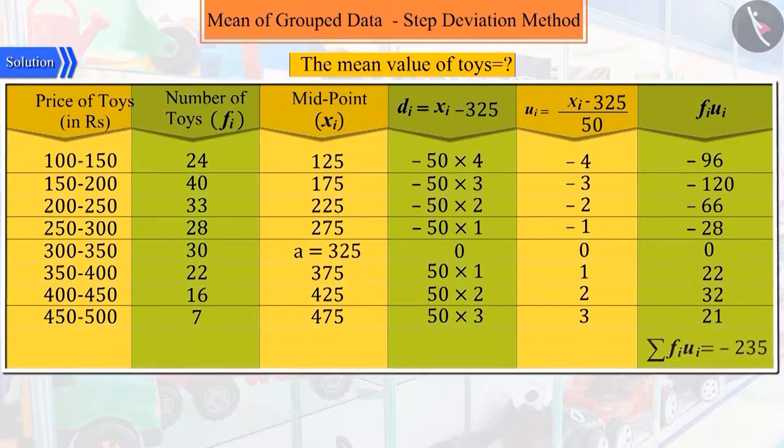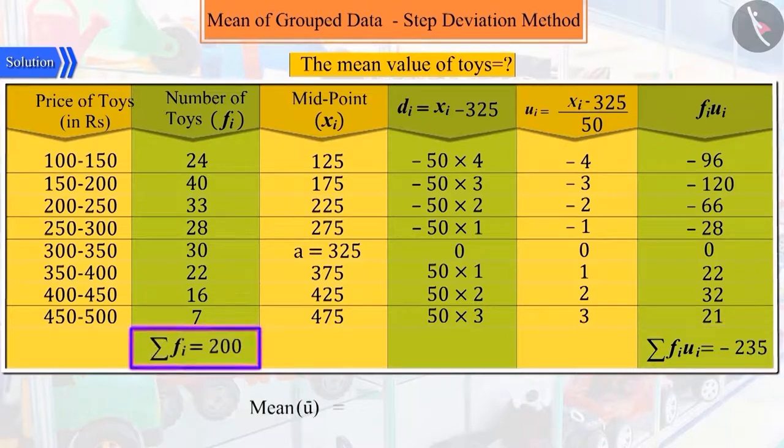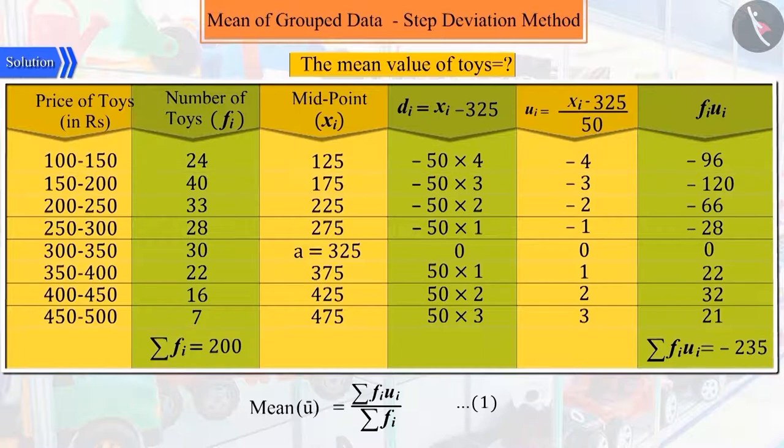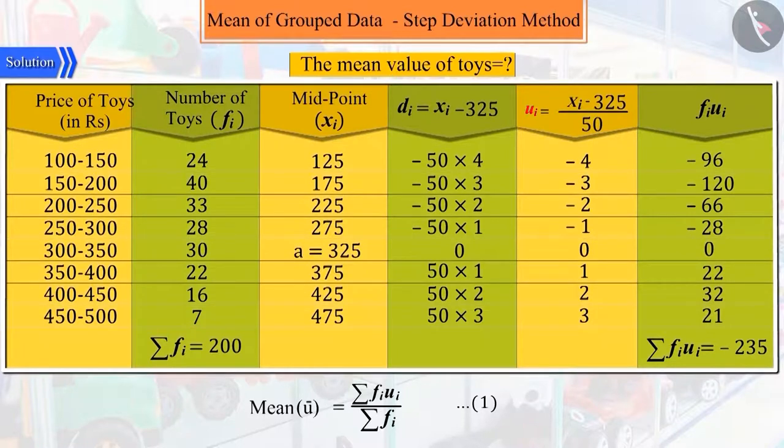And get the sum of their products and divide them by the sum of their corresponding frequencies. But you must be remembering that to obtain ui, we subtracted a from each xi and then divided it by h.